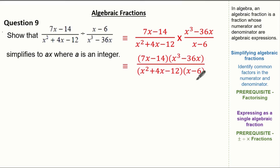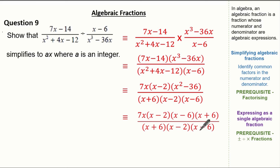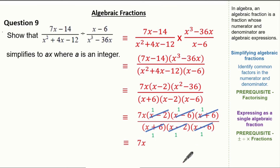Using factorization: 7x minus 14 gives 7(x minus 2); x cubed minus 36x gives x(x squared minus 36). The denominator x squared plus 4x minus 12 factorizes to (x plus 6)(x minus 2), and x minus 6 stays as is. The x squared minus 36 is a difference of two squares giving (x minus 6)(x plus 6). So the full expression becomes 7x(x minus 2)(x minus 6)(x plus 6) over (x plus 6)(x minus 2)(x minus 6). Cancelling all common factors leaves simply 7x, so a is 7.